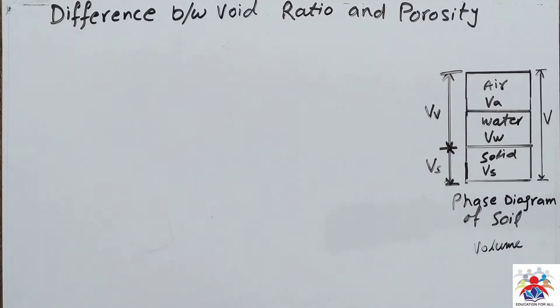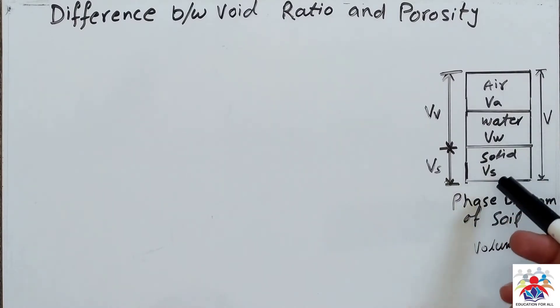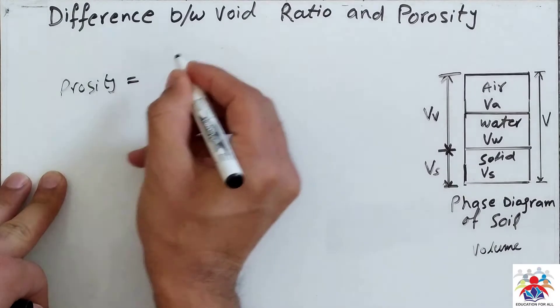So I have expressed this in a phase diagram of soil. We have air, water, and solid. These are three contents of our soil sample, you can say that. So volume of air, volume of water, volume of solid. I will express the difference between them two in the form of formula.